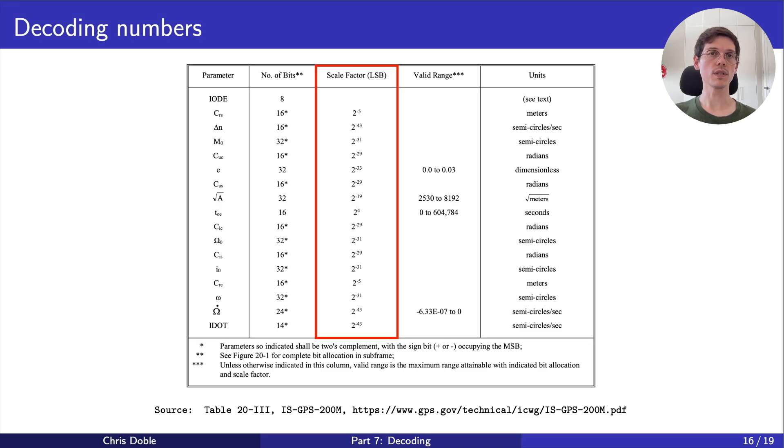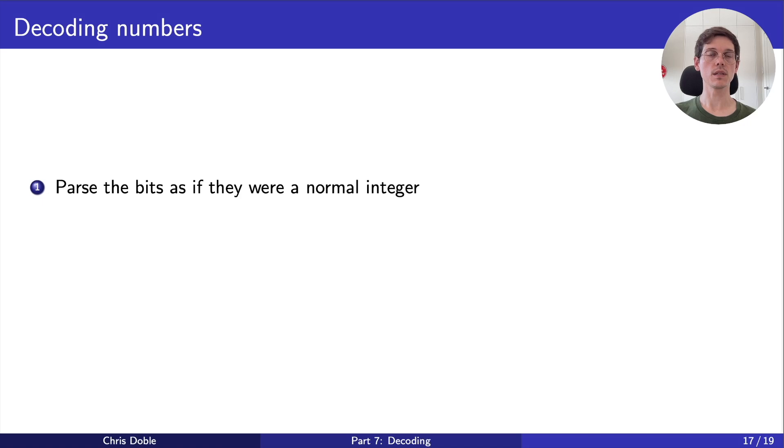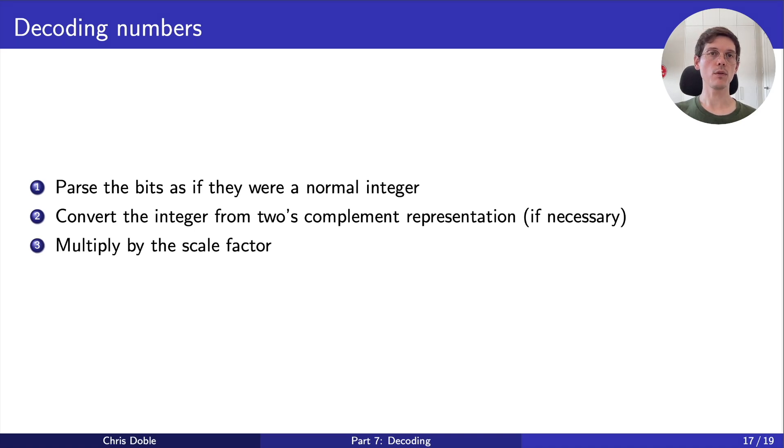The general process for decoding a number is to parse the bits as if they were a normal integer, convert the integer from 2's complement representation, if necessary, and multiply the result by the scale factor. Once we've parsed all the parameters we're interested in, we can forward the subframe to the next stage, the solving stage, to be used to calculate our location.